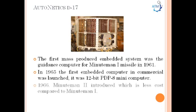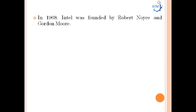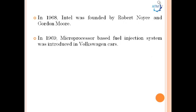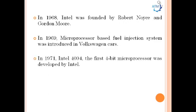In the year 1966, Minuteman 2 was introduced at a lower cost compared to Minuteman 1. Then in the year 1968, Intel was founded by Robert Noyce and Gordon Moore. The founding of Intel led to the evolution of microcontrollers and microprocessors. In the year 1969, a microprocessor-based fuel injection system was introduced in Volkswagen cars.